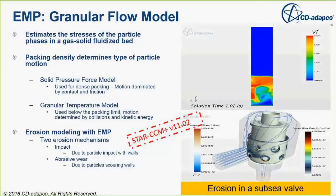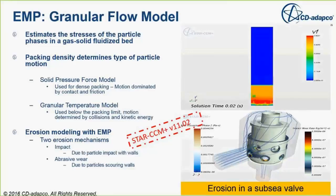In the EMP framework, when particles are involved as a phase, there are two different model types. In problems involving dense packing where motion is dominated by contact and friction, we have a solid pressure force model. In problems where motion is dominated by collisions and kinetic energy, we have granular type models. These models are primarily used in gas-solid and gas-solid-fluid simulations. We also have an erosion capability that captures erosion due to impact mechanisms and adhesive wear mechanisms.